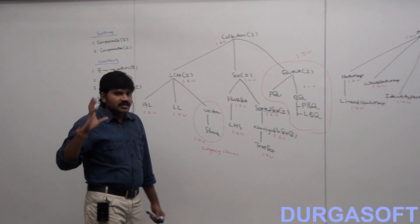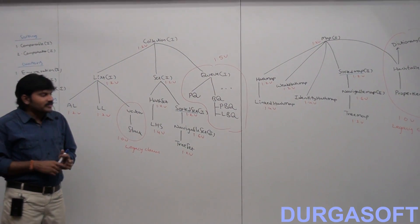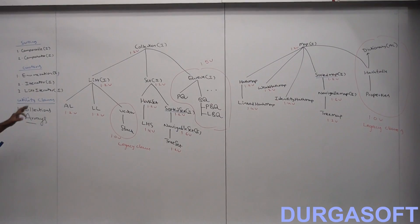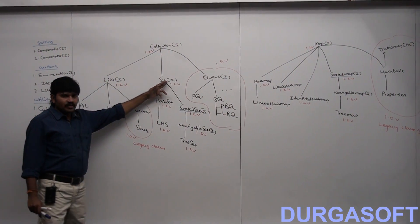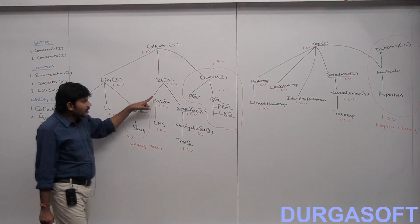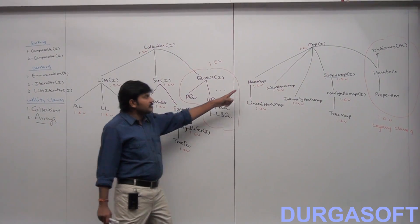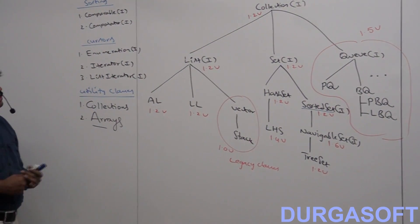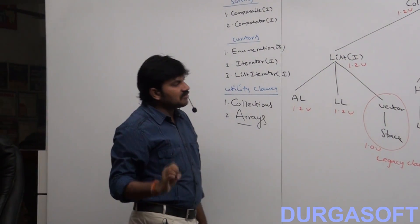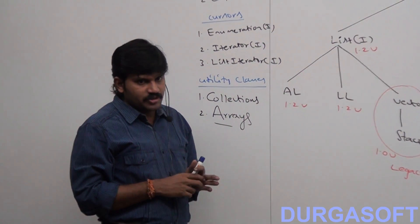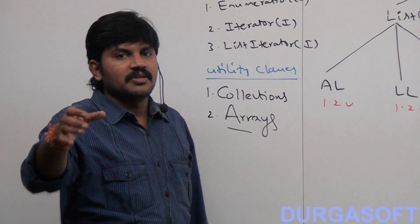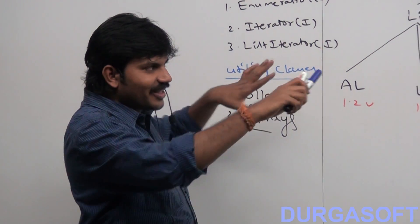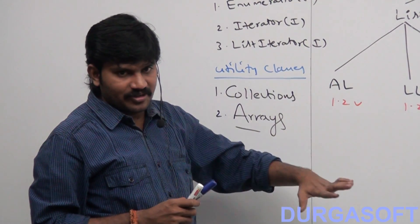In an interview, if asked about the Collections concept, you should draw this diagram. You should be aware of each and every difference: what is the difference between List and Set, between ArrayList and Vector, between HashSet and HashMap, between HashMap and Hashtable, between Comparable and Comparator, and between Enumeration and Iterator. If you know all of these, the interviewer won't ask anything else from this area. This is just the terminology overview — slowly we are going to dig into each and everything.